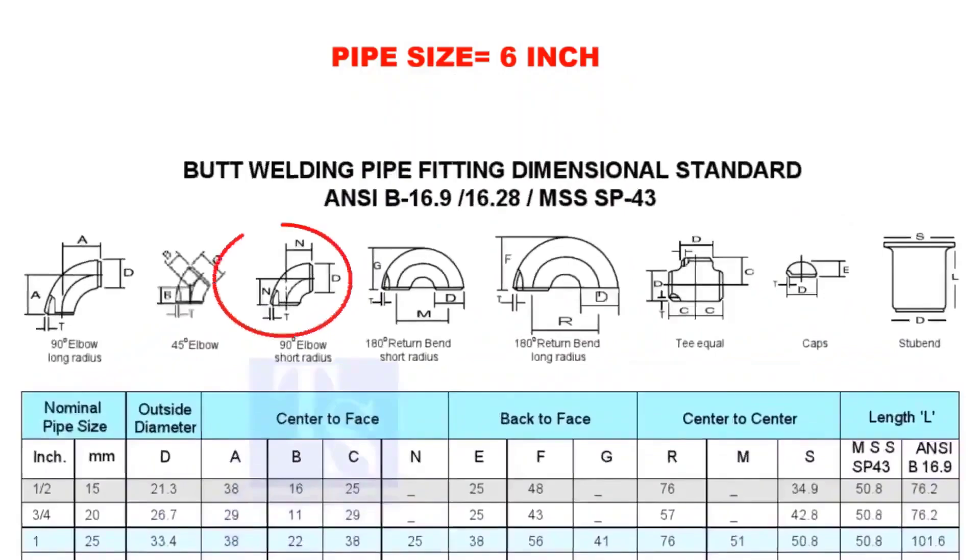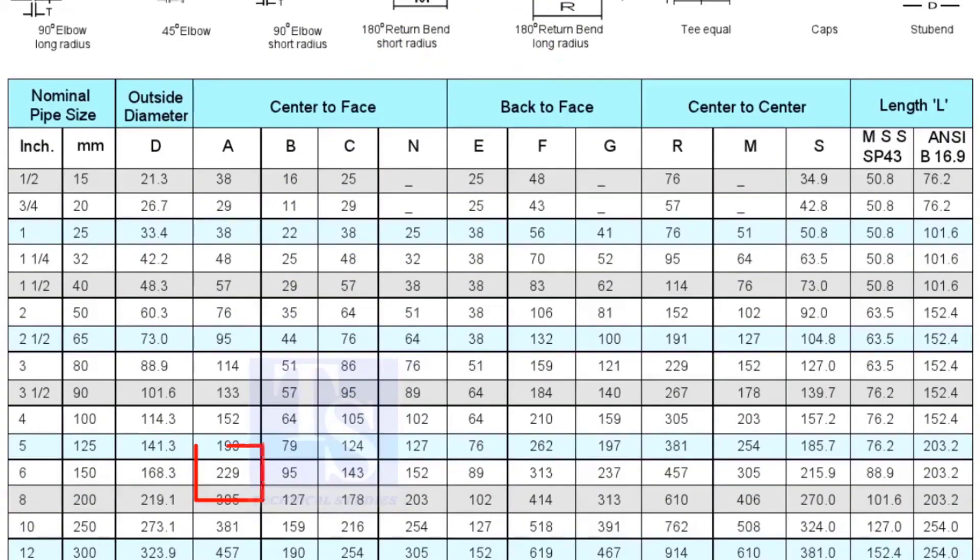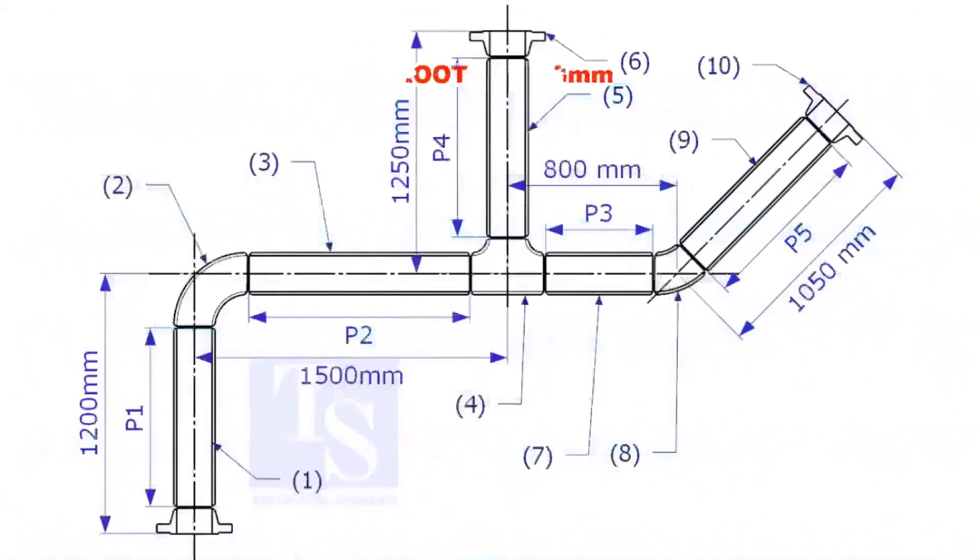Check the takeoff length of the elbow. It is 229mm. Assume the root gap is 3mm.